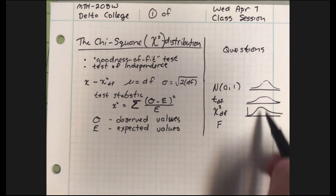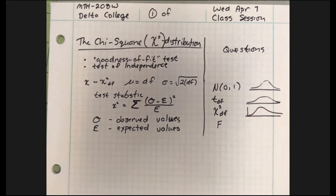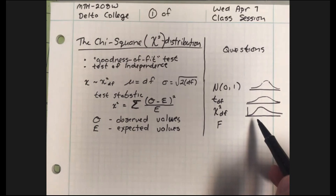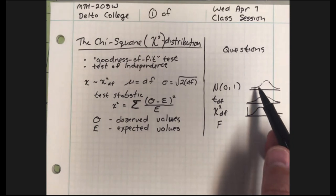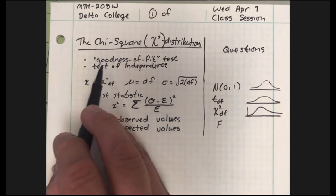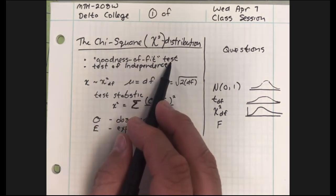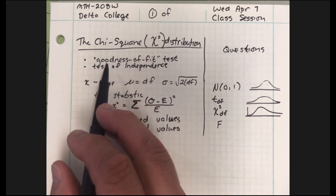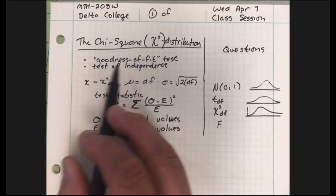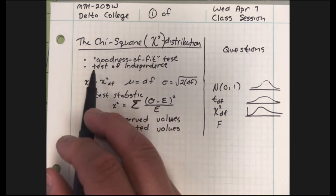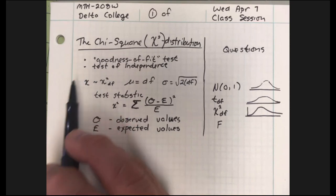Distributions are for testing things. You could make yourself a list of what things you can test with what distributions. The chi-square distribution tests for goodness of fit — does a distribution you are given match the distribution you were expecting? And the test of independence is very much like this: does the information you are given match the information you're expecting if two events are independent?